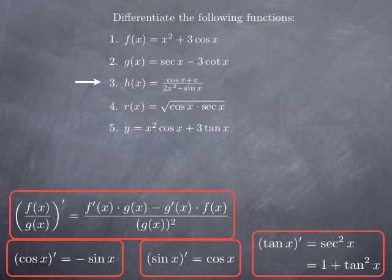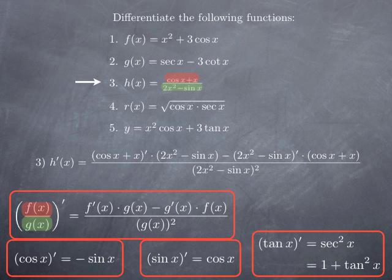For the third function, we have again a quotient, so we are going to apply the quotient rule again. The top is cosine x plus x, the bottom is 2x squared minus sine x. Applying the quotient rule, we get the derivative of the top multiplied by the bottom — that is, derivative of cosine x plus x, multiplied by 2x squared minus sine x — then we subtract the derivative of the bottom, which is the derivative of 2x squared minus sine x, multiplied by the top unchanged, which is cosine x plus x, and divide by the square of the bottom, in other words the square of 2x squared minus sine x.